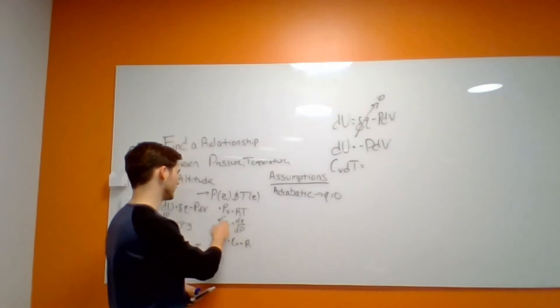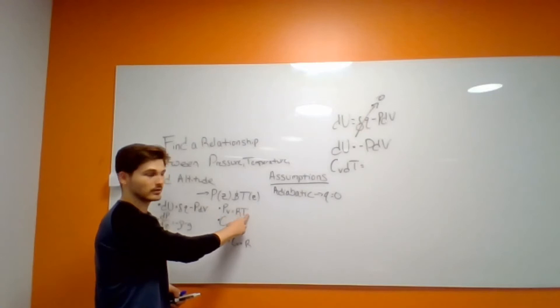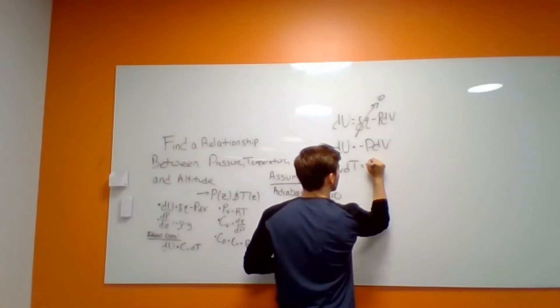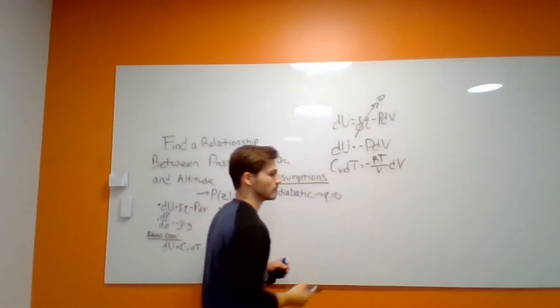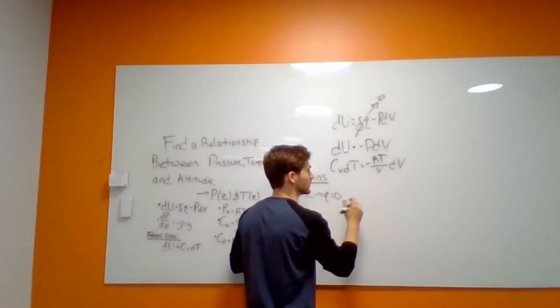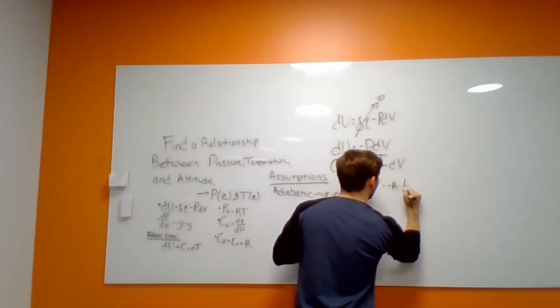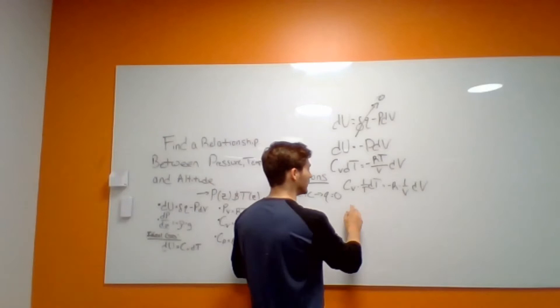So we have dU, the change in internal energy, equal to Cv times dT. And for dV, we're going to substitute in RT over P so that we're working with a temperature variable rather than a volume variable. So we'll have negative RT over P times dV. We go ahead and manipulate this to make solving the integral much easier: Cv times T·dT is equal to negative R times V times dV.